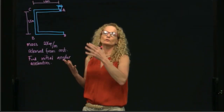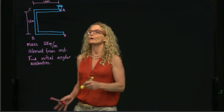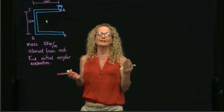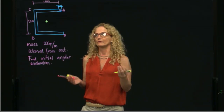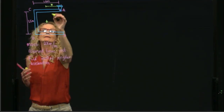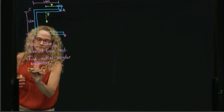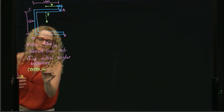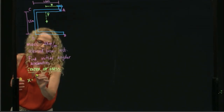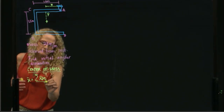Since this is a rigid body composed of three bars, the first thing we want to do is find our center of mass. Because since it's a rigid body, our equation of motion would include the acceleration of the center of mass. So let's find the center of mass, measuring from this corner. We have to find x and y.